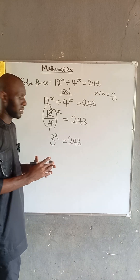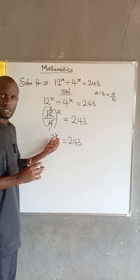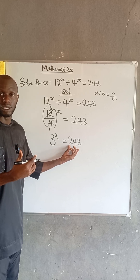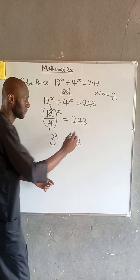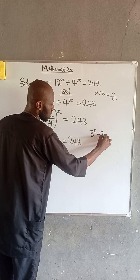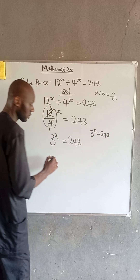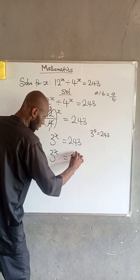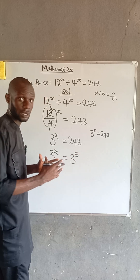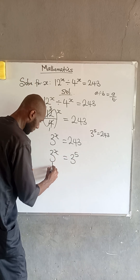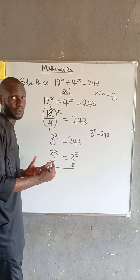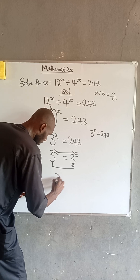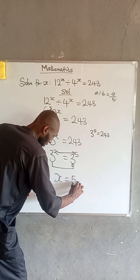Now, looking at the left-hand side, we have 3 to the power of x. Can we express the right-hand side to have the base of 3? Yes, because 3 to the power of 5 is equal to 243. So we have that 3 to the power of x is equal to 3 to the power of 5. Since their bases are the same, it follows that their indices are the same. Therefore, x is equal to 5.